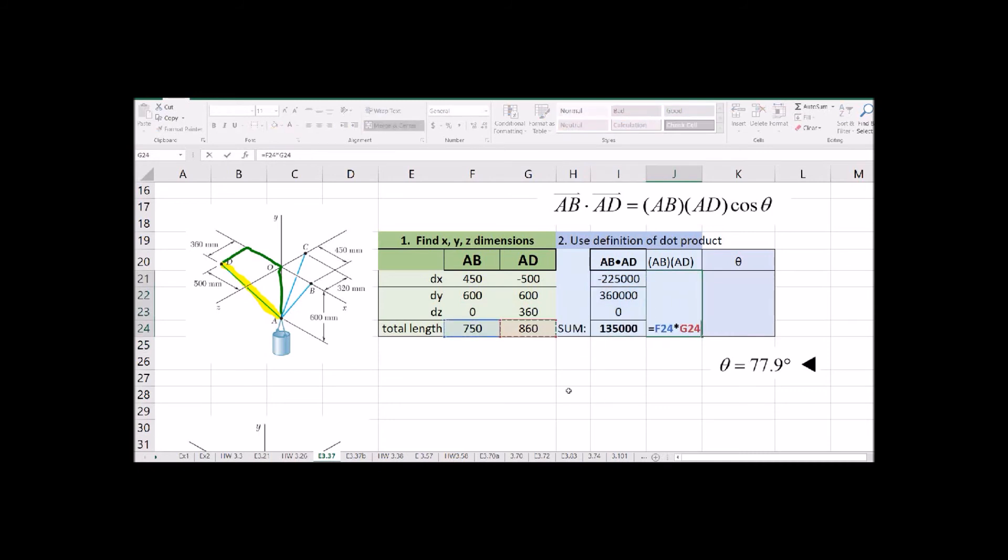Now we need the magnitude, so we're just multiplying the lengths by one another. And we can calculate our angle using the arc cosine. Remember to use degrees. So pretty fast and easy to solve these guys in Excel.